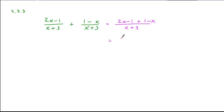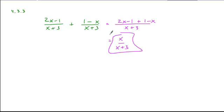2x minus x leaves a 1x, the ones cancel, x plus 3 stays in the denominator, and that would be your simplified form.